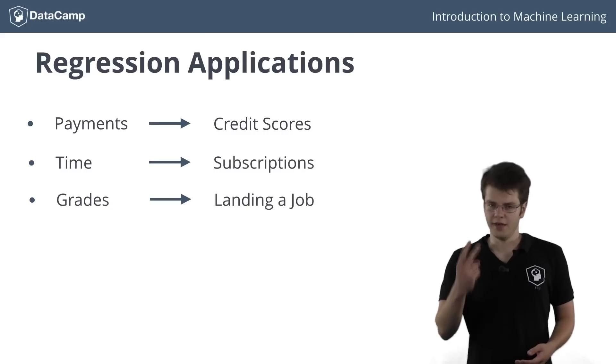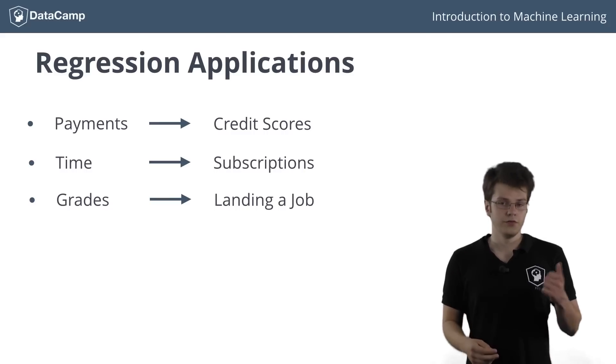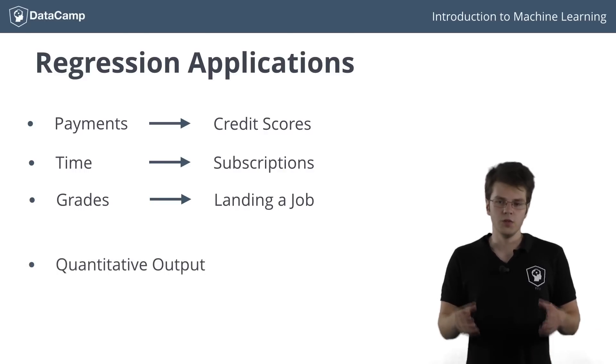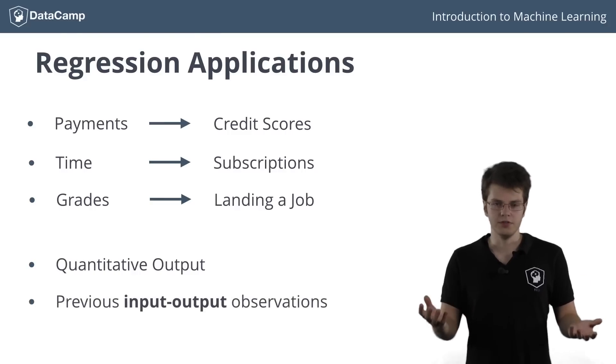All these problems have two things in common. First off, the response, or the thing you're trying to predict, is always quantitative. And second, you will always need input knowledge of previous input to output observations in order to build your model. The fourth chapter of this course will be devoted to a more comprehensive overview of regression.